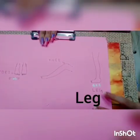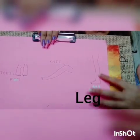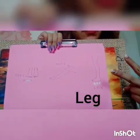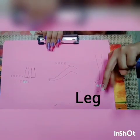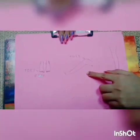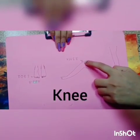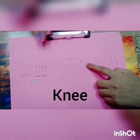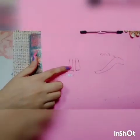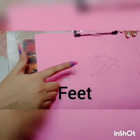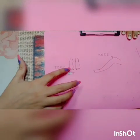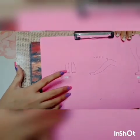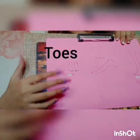Since we have completed almost all the upper body parts, we will now move to the lower body parts. Leg — this is a leg. We have two legs. We walk with our legs. Next is knee — this is our knee. Next, feet — these are our feet. And the fingers that we have on our feet are known as toes. We have ten toes.